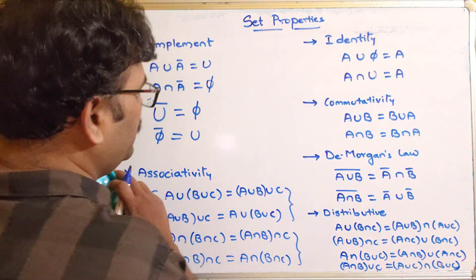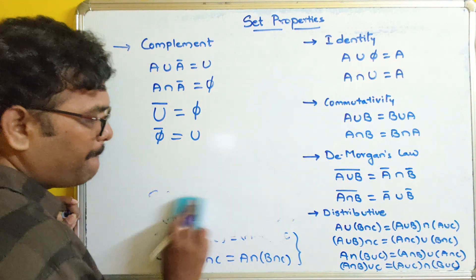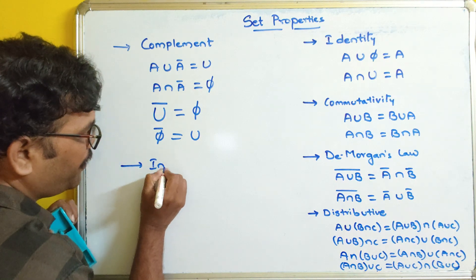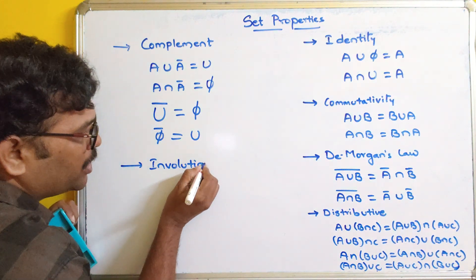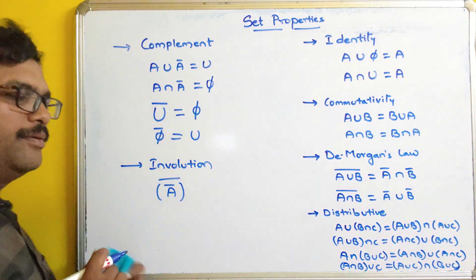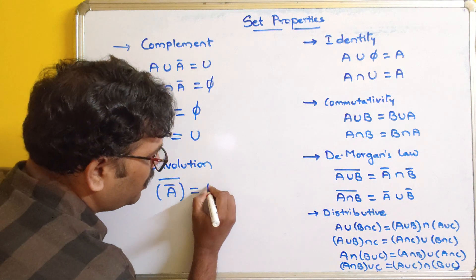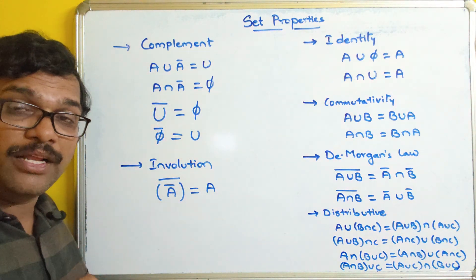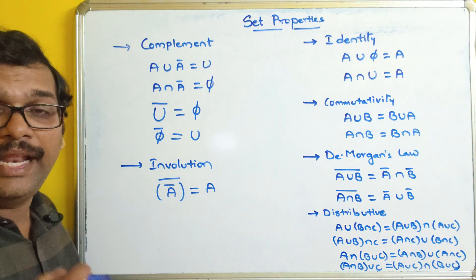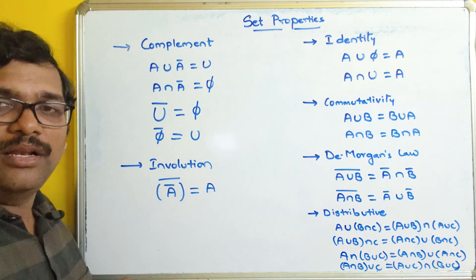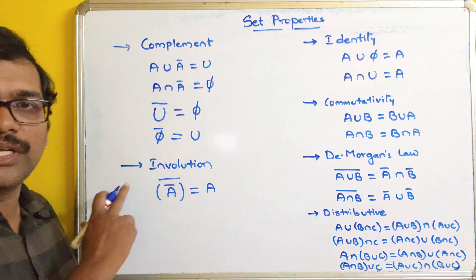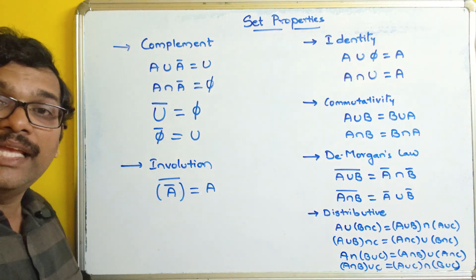The last property is involution. The complement of the complement of A gives A back. In our mathematical logic, we studied this as double negation — negation of negation of A becomes A. Similarly, complement of complement of A becomes A. This is called involution.